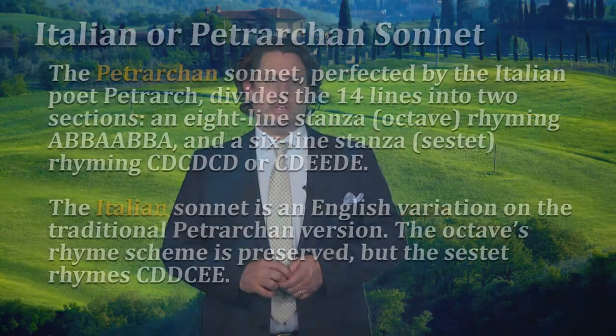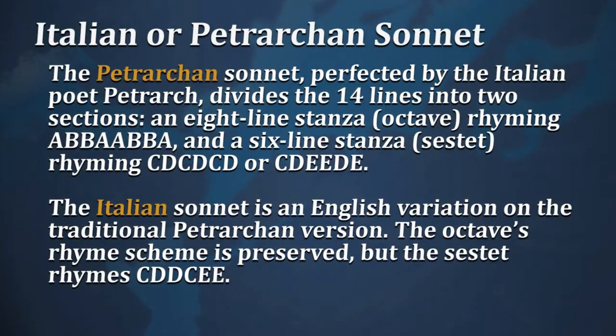The Italian sonnet that we have is an English variation on that original version. It's written in English, whereas the Petrarchan sonnets were written originally in Italian. The octave's rhyme scheme is the same, but the sestet rhymes C, D, D, C, E, E.